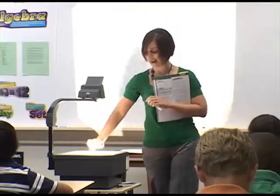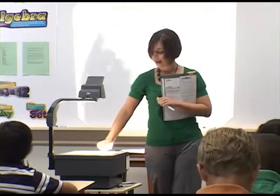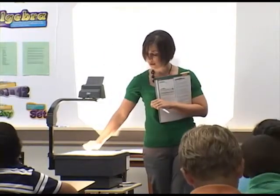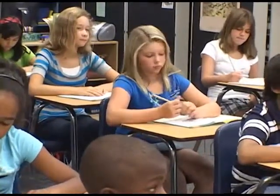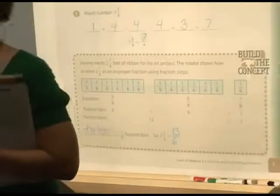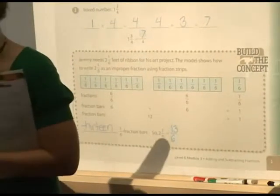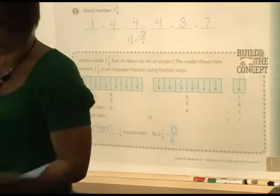That tells me that two and one-sixth is the same as what improper fraction? If I have thirteen one-sixth bars, how could I say that as an improper fraction? Looking back at my previous example, I had seven one-fourth pieces and called it seven-fourths. So here with thirteen one-sixth pieces, what would we call it? Thirteen-sixths. My numerator is thirteen because of the thirteen one-sixth pieces. My denominator stays the same as it was in my mixed number.